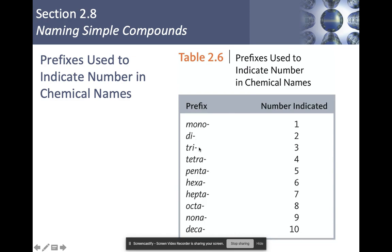Here are our prefixes. Mono, di, tri, tetra, penta, hexa, hepta, octa, nona, and deca. So 1 through 10.